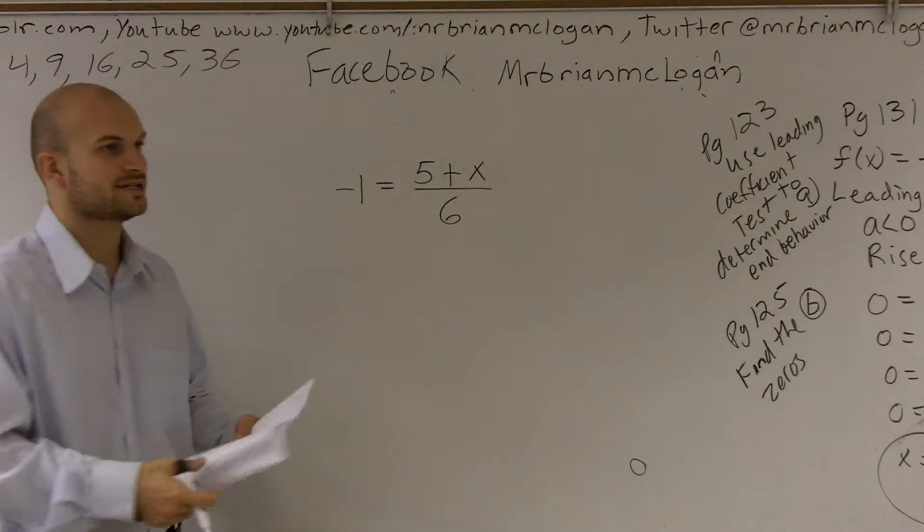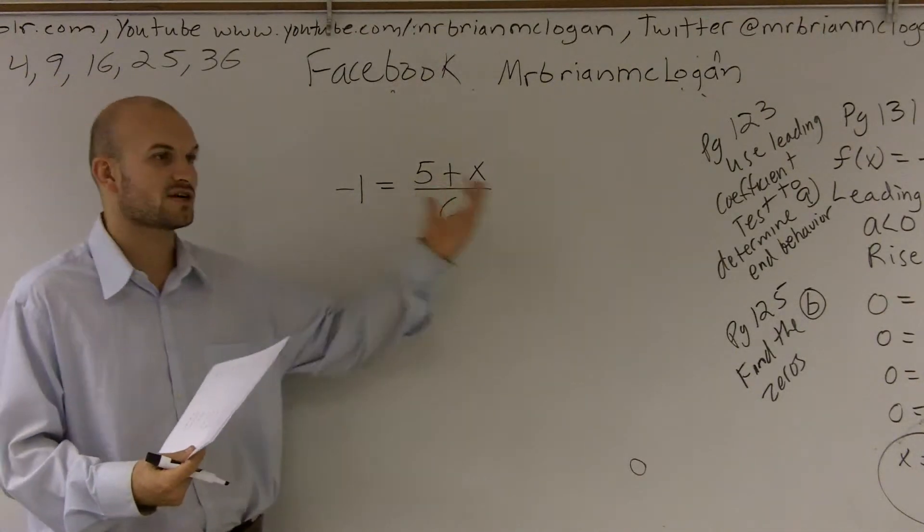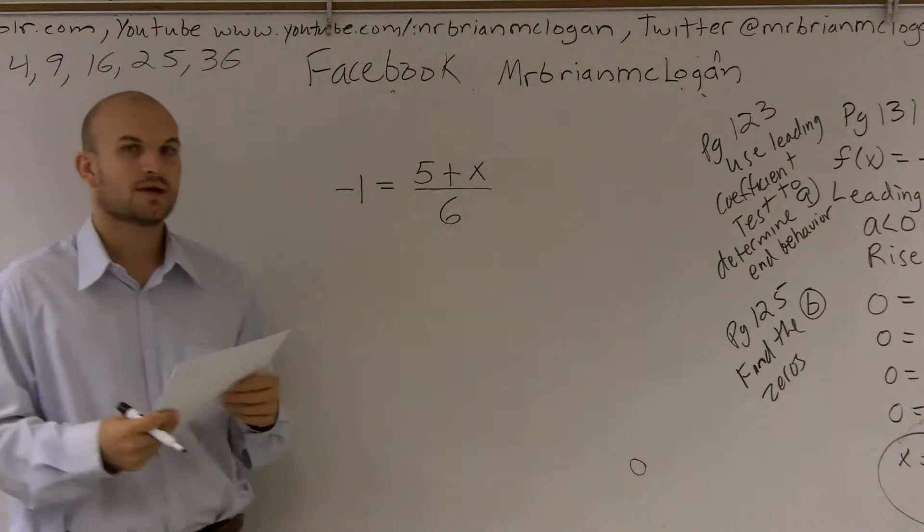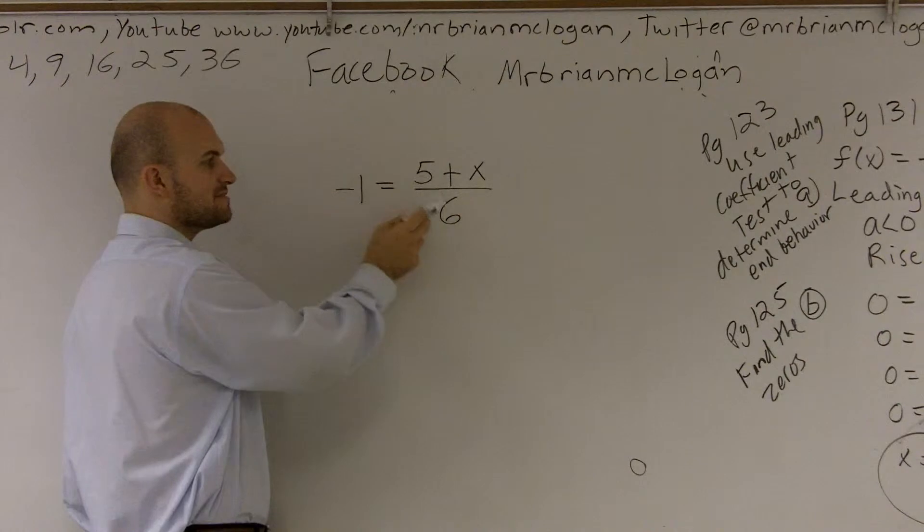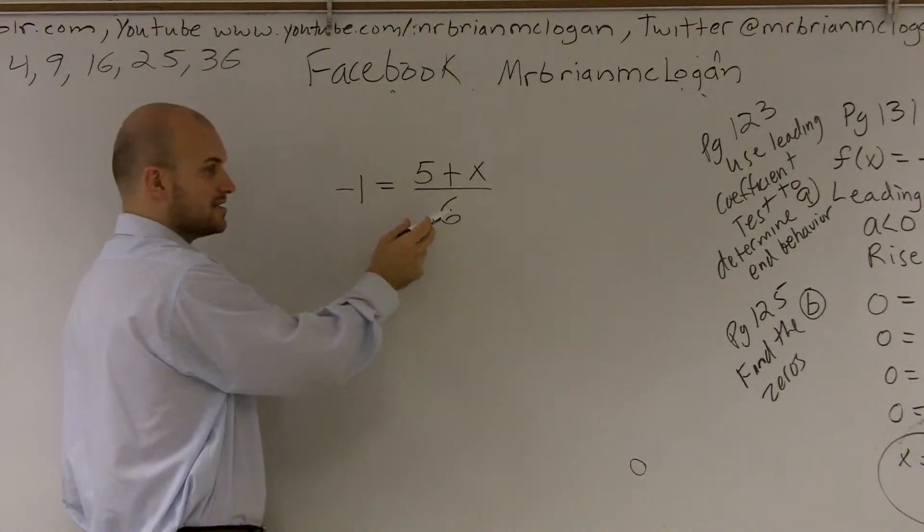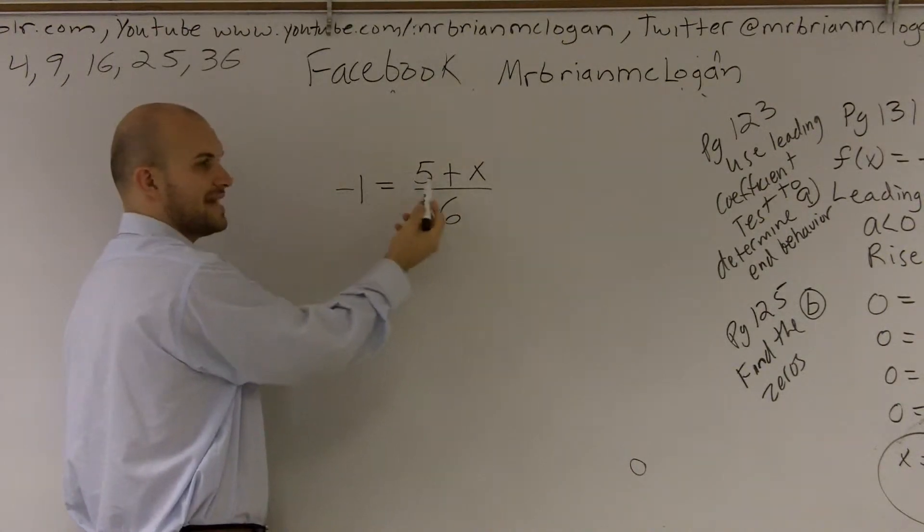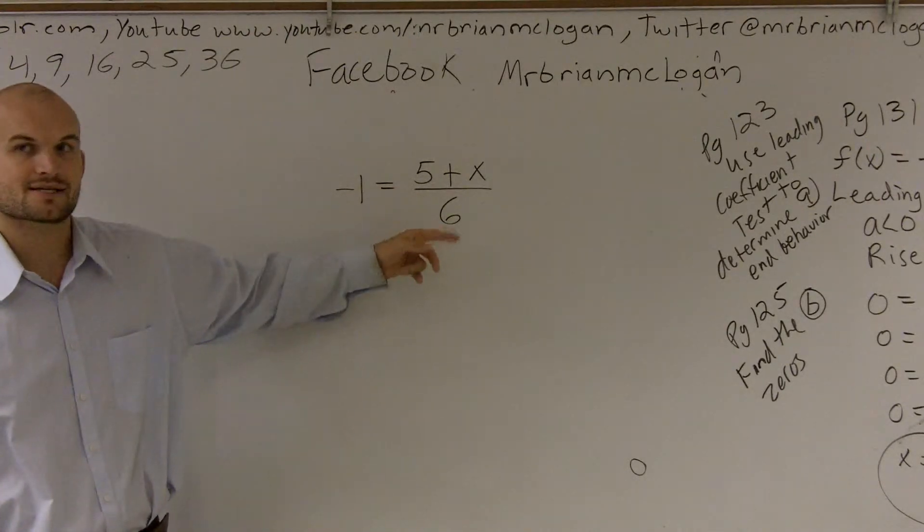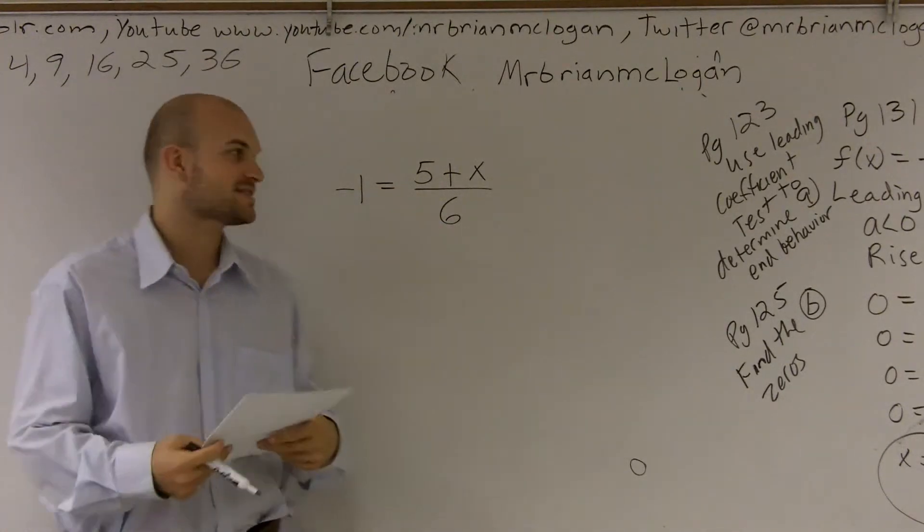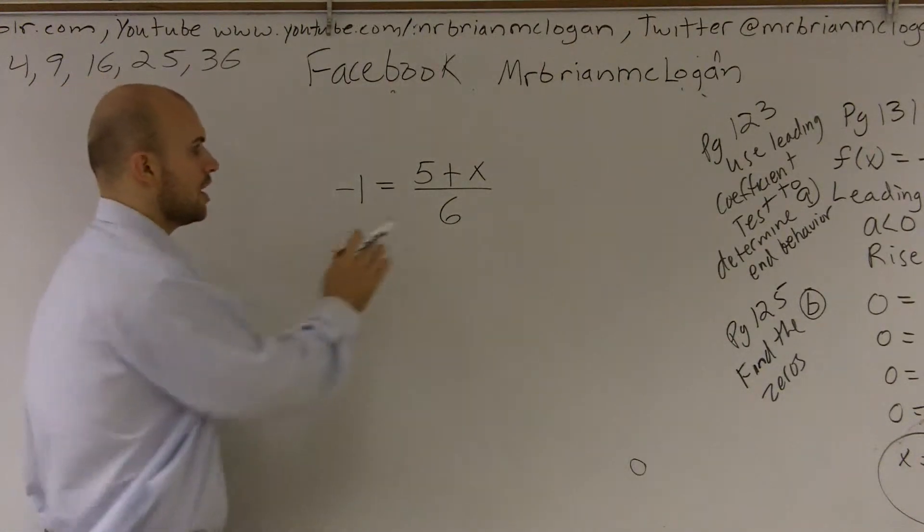I've told you over and over again, we want to undo our operations as far as adding and subtracting to our variable. But our problem right now is we have a 5 that's added to our variable, but that 5 is being divided by a 6. So if we were to subtract, we can't just subtract a 5 because that's actually a 5 divided by 6. So the first thing we're going to want to do is simplify our equations.